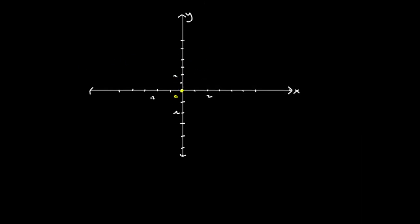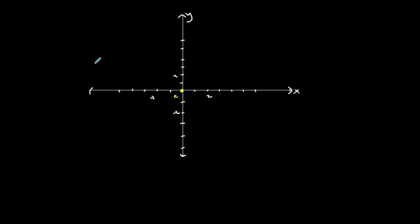Now, to get to a vertex, the distance from the center to a vertex is a. So a is 2. Now, the transverse axis is horizontal. A is 2. The transverse axis is horizontal. So I'm going to go to the right 2 and to the left 2 to get my vertices.